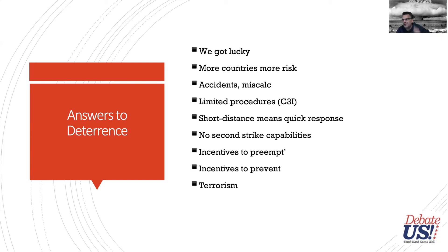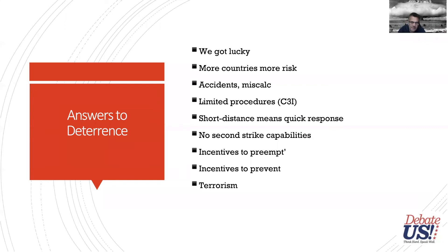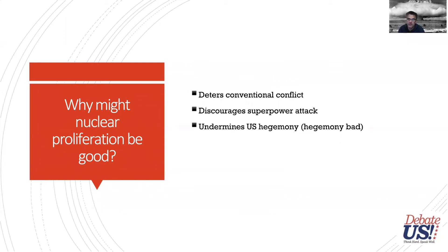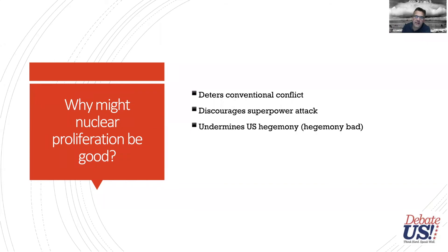There's a book called 'The Spread of Nuclear Weapons' with dueling chapters by Kenneth Waltz and Carl Sagan — it reads almost like a public forum debate. Sagan argues why proliferation is bad; Waltz argues why it's good. They then write rebuttals to each other. Why might proliferation be good? It deters conventional conflict, could deter superpowers from attacking smaller countries, and arguably undermines U.S. hegemony — it's harder to push your power around if other countries have nuclear weapons.